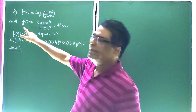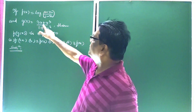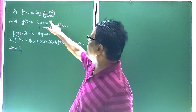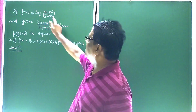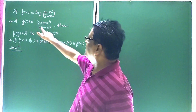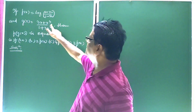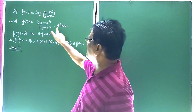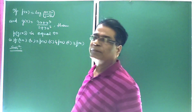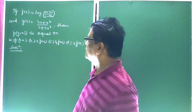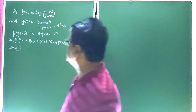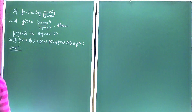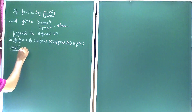The question is: if f(x) is equal to log of (1 + x)/(1 − x), and g(x) is equal to (3x + x³)/(1 + 3x²), then f(g(x)) is equal to what? Choices are given and we have to find the correct answer.